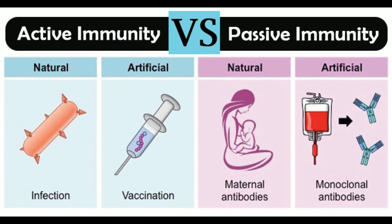Difference 11 — Durability: The protection offered by active immunity is long-lived, while passive immunity provides only transient protection. Difference 12 — Response time: In active immunity, the protective response takes time to establish as a lag period is present. In passive immunity, there is no lag period, hence the protection is instant. Difference 13 — Reactivation: Active immunity is reactivated by the recurrence of infection or by revaccination, while passive immunity requires frequent re-administration for renewed protection.